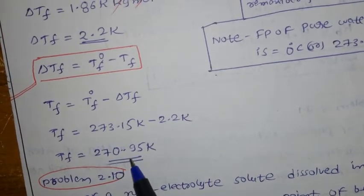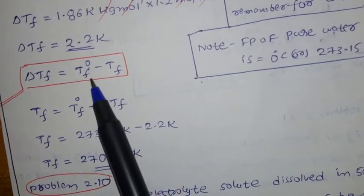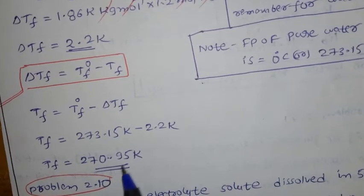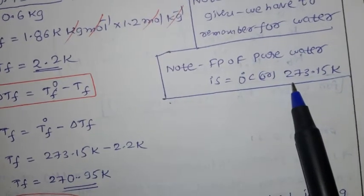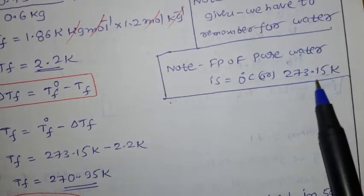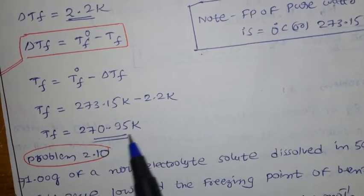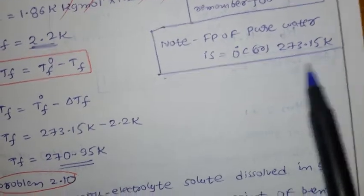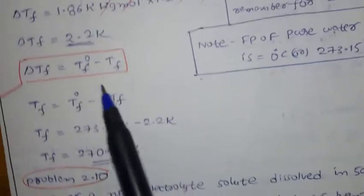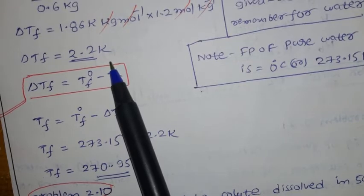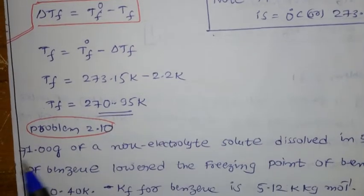Tf = 273.15 − 2.2 = 270.95 kelvin. You can see that the freezing point of pure water was 273.15 K, and after adding the non-volatile solute it decreased to 270.95 K — a depression of 2.2 kelvin. This is called depression in freezing point.